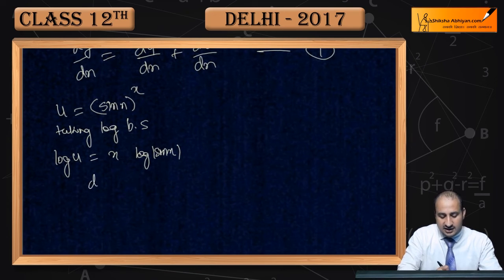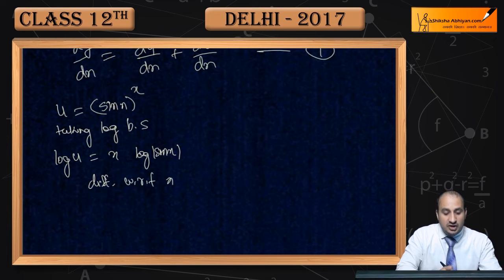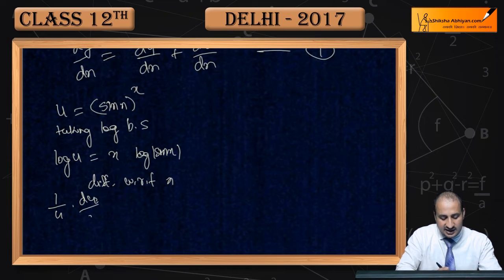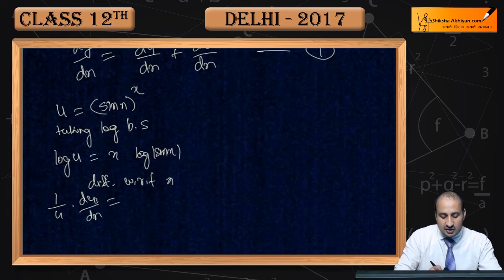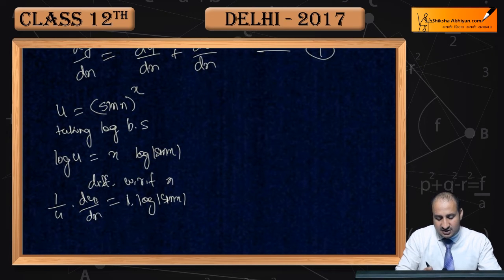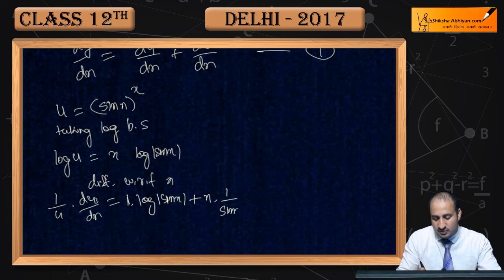Ab yahan par differentiate karenge with respect to x. Aapko kya milega: 1/u · du/dx — kyunki log u ka 1/u hota hai. Ab x·log(sin x) ka product rule se: x ka differentiation 1, log(sin x) as it is, plus x as it is into log(sin x) ka derivative — 1/sin x — into sin x ka differentiation cos x.